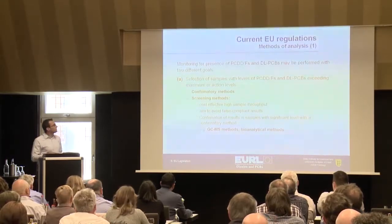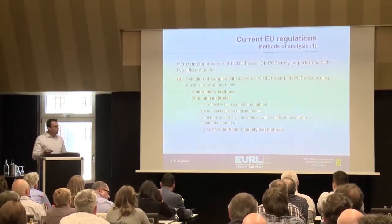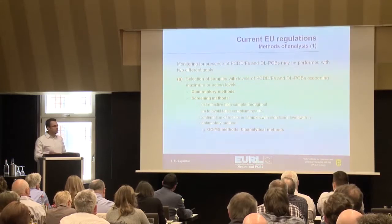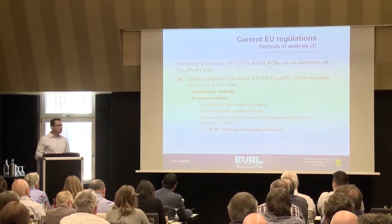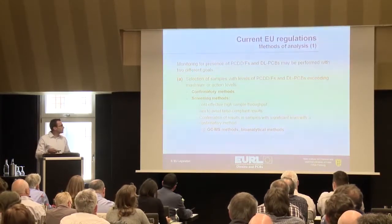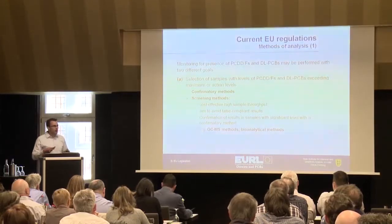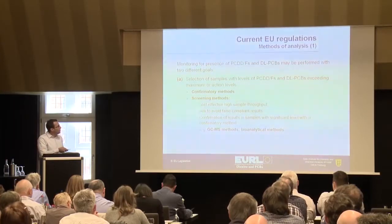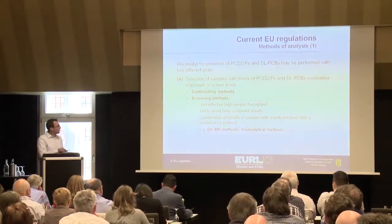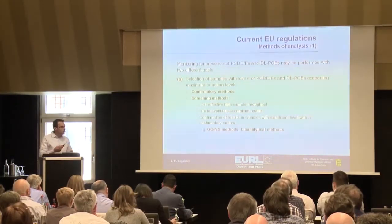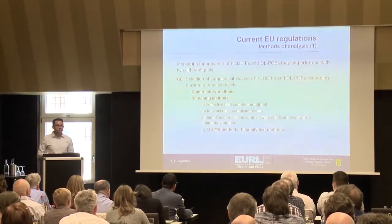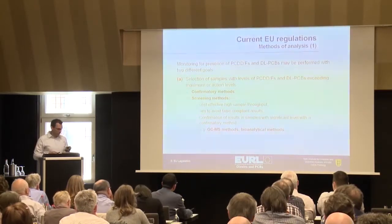Looking in more detail at the current EU regulations: monitoring for the presence of dioxins and PCBs may be performed with different goals. The first goal is the selection of samples which are above maximum or action levels. You can do it with confirmatory methods, but also with screening methods — cost-effective, high sample throughput methods. At the moment, these are mostly the bioanalytical screening methods, CALUX methods for example. It is important to avoid false compliance, and a confirmation is always needed. This can be GC-low resolution MS, GC-MS-MS, and bioanalytical screening methods — though in practice this is only a bioanalytical screening method in most cases.